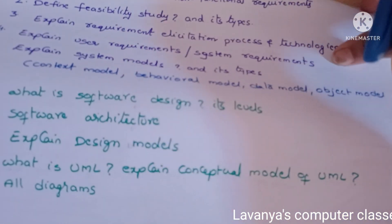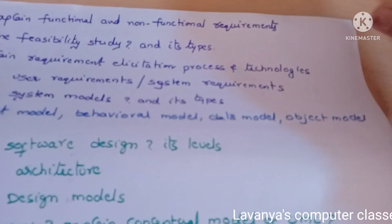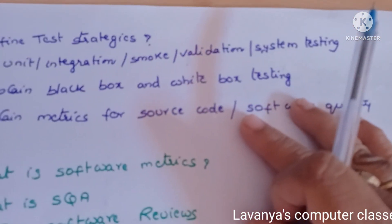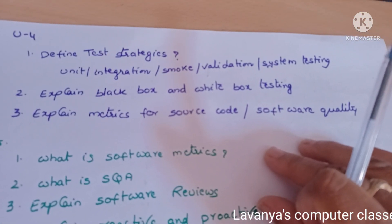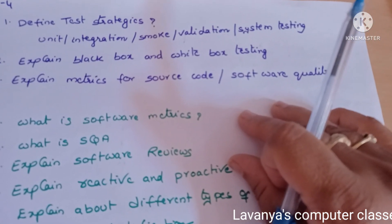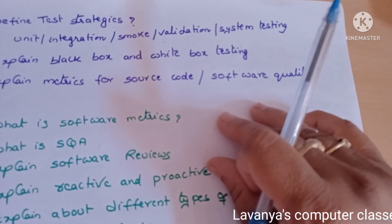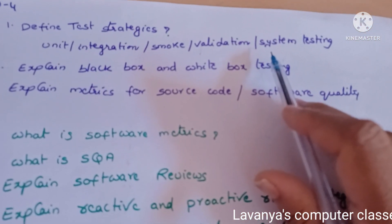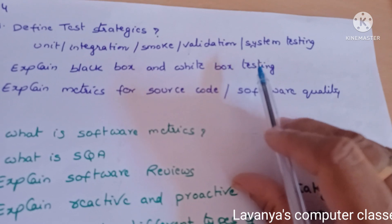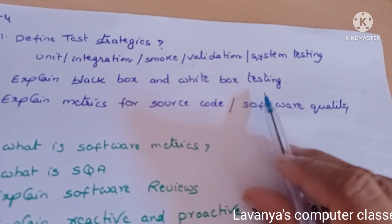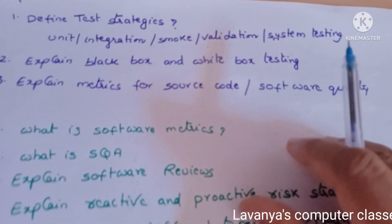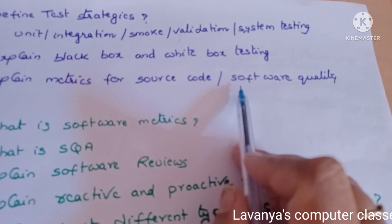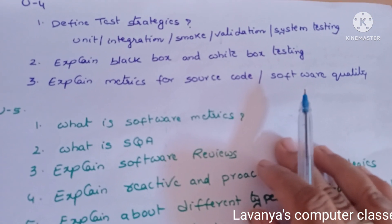Unit four: It's a simple unit but has important questions. Define test strategies — there are strategies such as unit test, integration test, smoke test, validation test, and system test. Read all the testing strategies, as they are also asked individually. Next, a very very important question: explain black box and white box testing strategies. Also explain metrics for source code and software quality metrics — read all the questions.